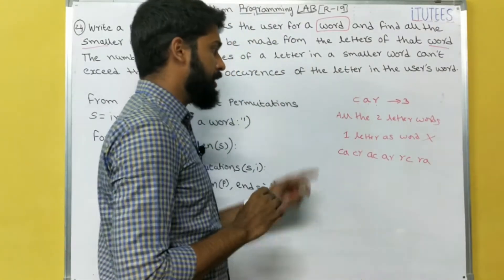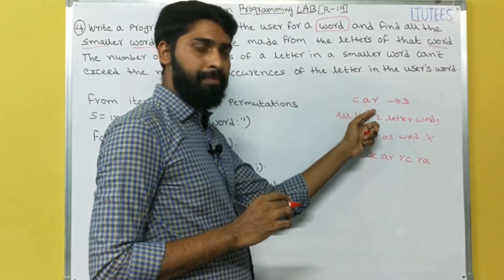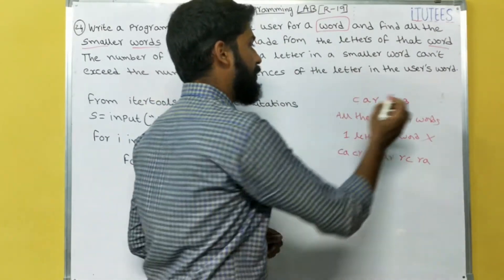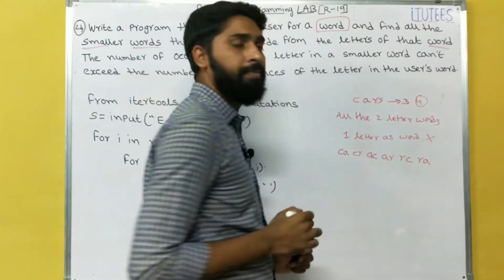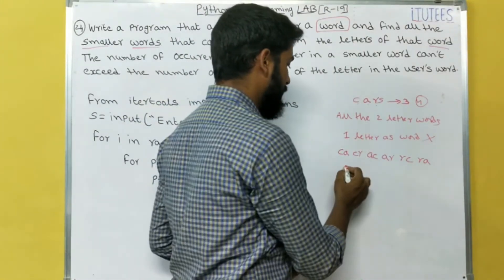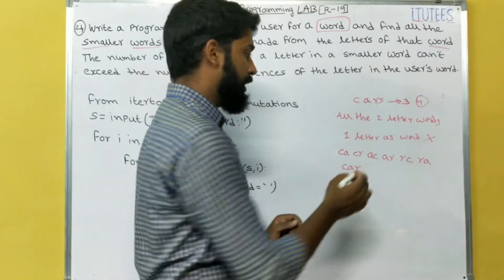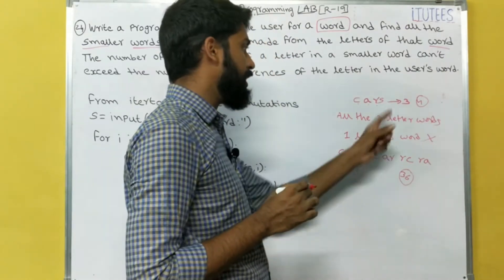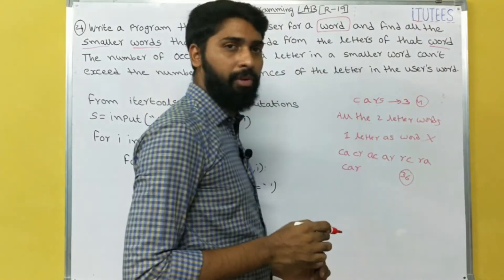So this is the output. That means if you enter a three-letter word, we get the two-letter words as output. For example, if you enter a four-letter word like 'cars', then we can get the two-letter words as well as three-letter words as output. In this case we get 36 combinations.